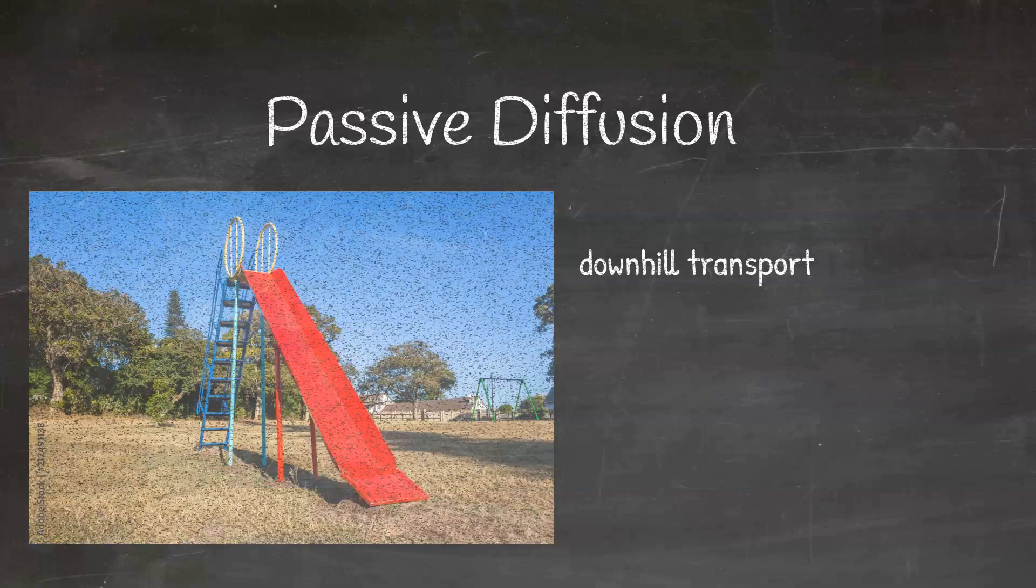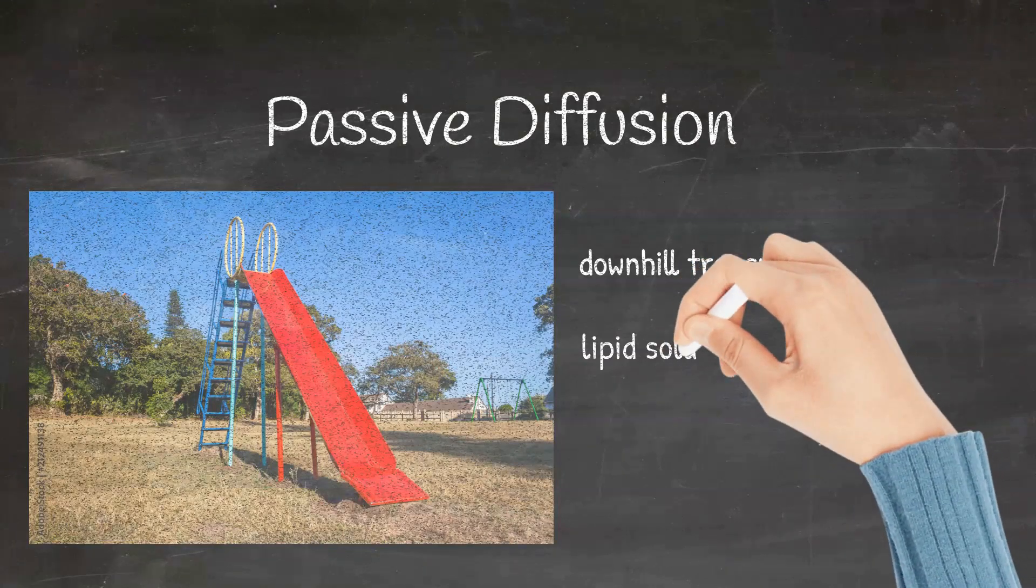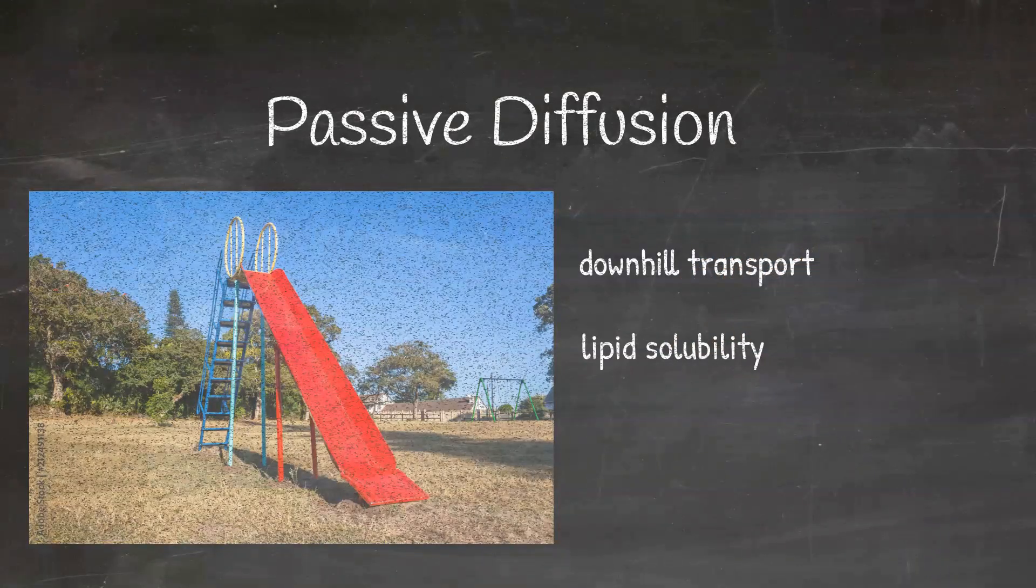Most of the drugs that we consume undergo passive diffusion. Passive diffusion is seen better with lipid-soluble drugs and is also dependent on the pH of the drug. Remember, drugs which are weak acids remain non-ionic in acidic medium. And hence, weak acids are better absorbed in acidic medium.